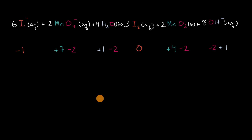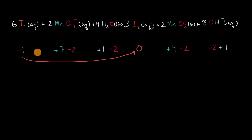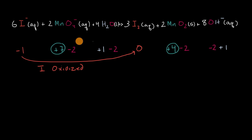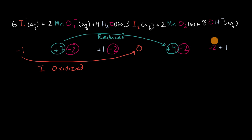So now let's think about who's been oxidized and who's been reduced. Remember, oxidation is losing electrons — OIL RIG. Reduction is gaining electrons, or a reduction in the oxidation number. First, let's look at iodine. We go from an oxidation number of negative one to zero. To go from negative one to zero, you need to lose electrons, so it has been oxidized. Now let's look at manganese. We go from plus seven to plus four. Our oxidation number has gone down — it has been reduced. Now let's look at oxygen: everywhere it has an oxidation number of negative two, so nothing there. And hydrogen is plus one on both sides, so nothing there. The iodine has been oxidized and the manganese has been reduced.